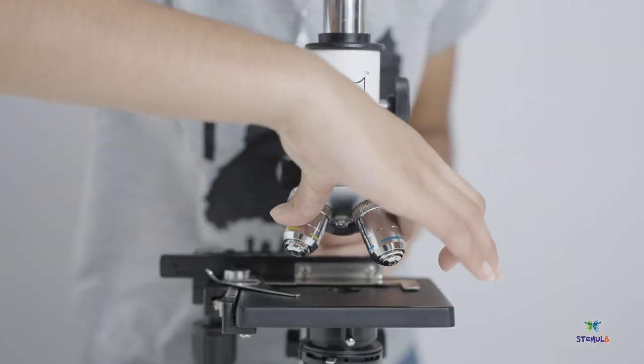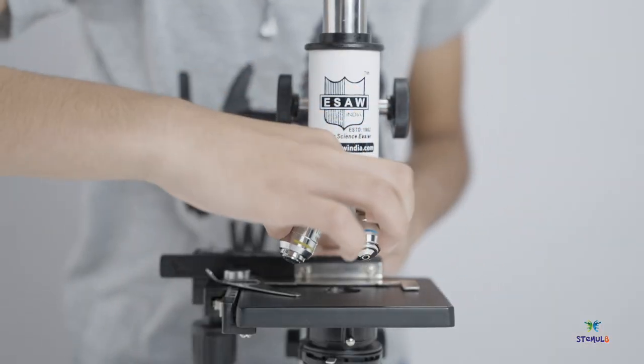Next, turn the revolving nose piece to adjust the lowest magnification objective lens in position.